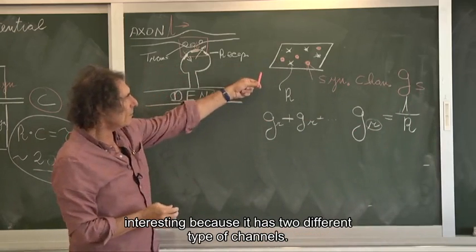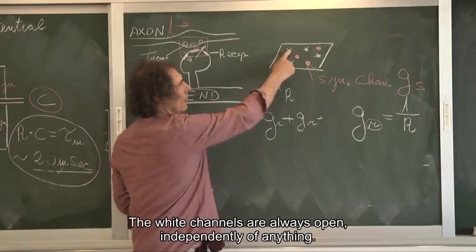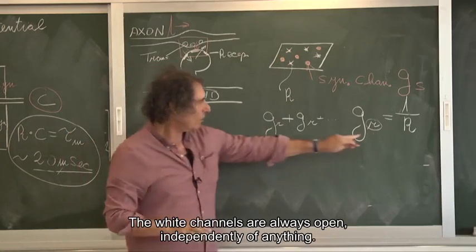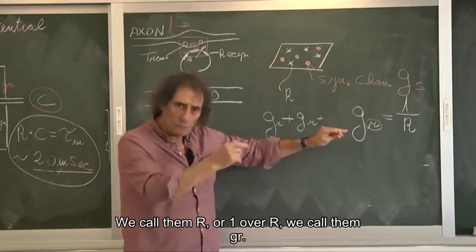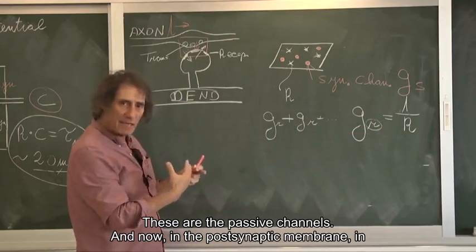So you saw that this membrane is interesting because it has two different types of channels. The white channels are always open, independently of anything. We call them R, or 1 over R, we call them GR. These are the passive channels.